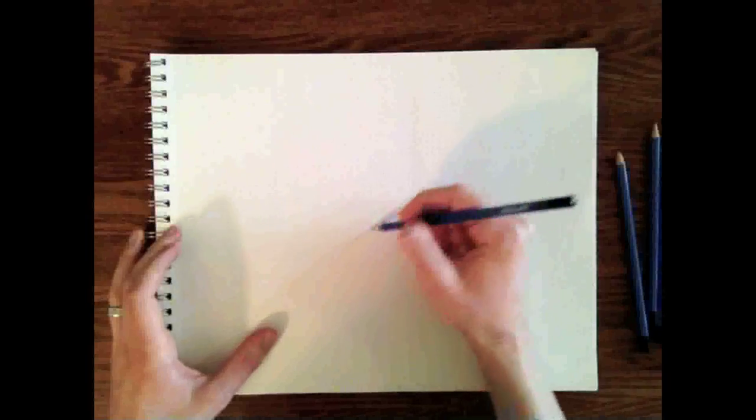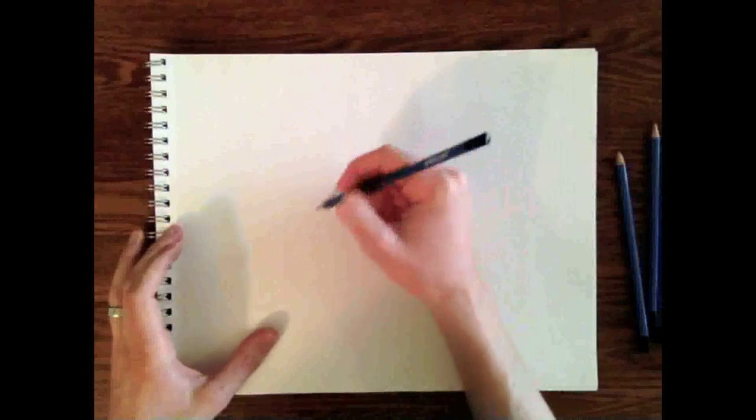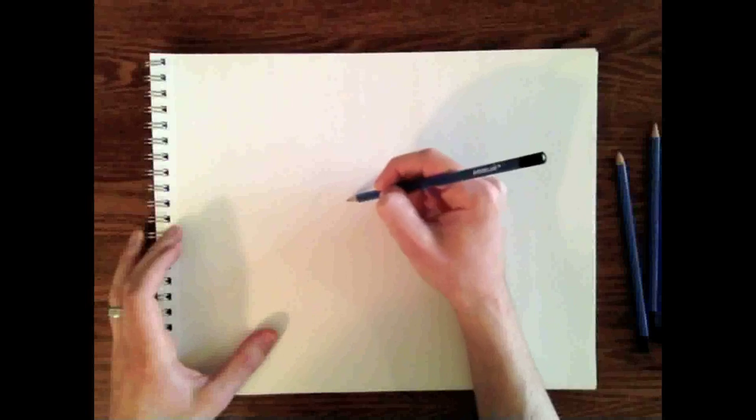So as we know, the eye has a sphere, it is round. So that's how we're going to start.